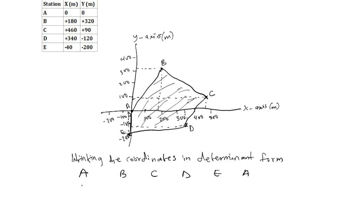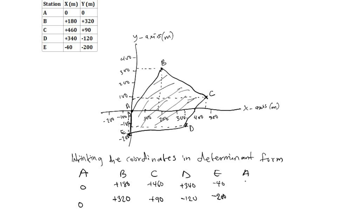Point A has coordinates (0, 0). Point B is (180, 320). Point C is (460, 90). Point D has coordinates (340, minus 120). Point E is (minus 40, minus 200), while our closing point A is again (0, 0).